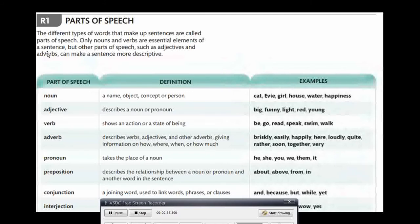Only nouns and verbs are essential elements of a sentence, but other parts of speech such as adjectives and adverbs can make a sentence more descriptive. Let us see the parts of speech. There are eight as listed over here.